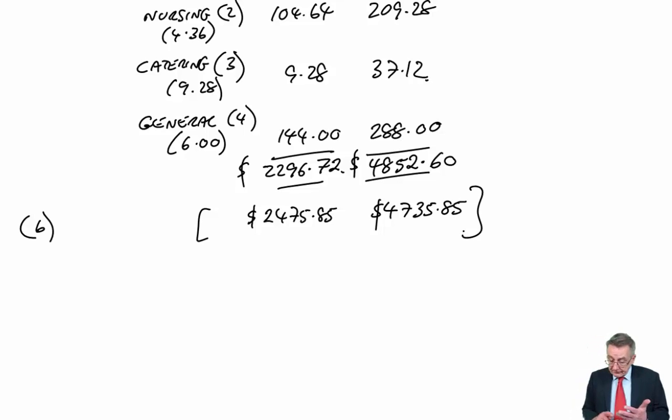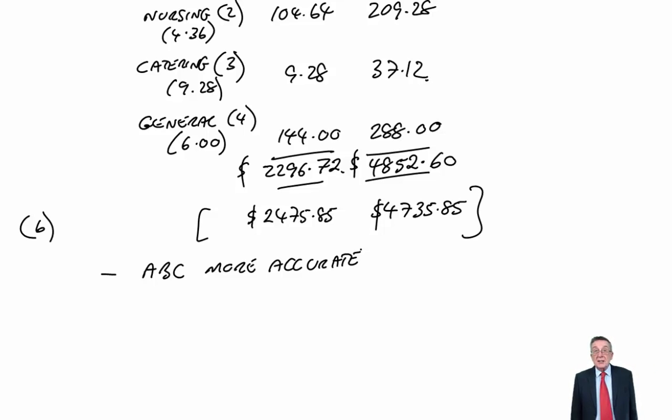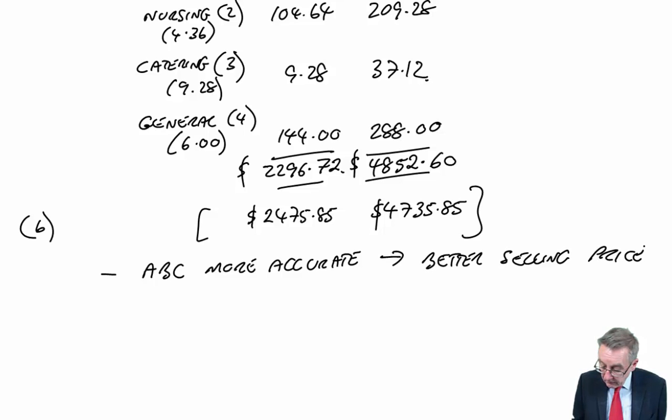The two obvious comments, if you've done any work in activity based, would be firstly, activity based is more accurate. And the reason that's important is that the total overheads are the same whatever we do. In total, it's 17.606 million. But the reason you want more accurate costings is you'll be able to arrive at a better selling price. It will lead to better selling price decisions. It's a private hospital. They want to make sure that they're making a profit on each procedure. And so the more accurate their costings are, the better base that becomes for the selling price. So that's a standard comment for any ABC.